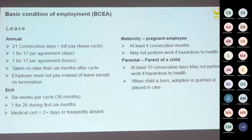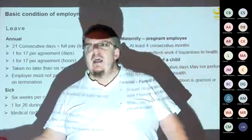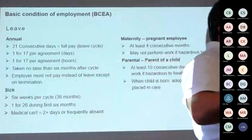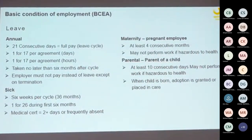Now, leave. How does leave work? We all need rest. The law says you need to have at least 21 consecutive days full-pay leave per leave cycle. The leave cycle is usually January to December.